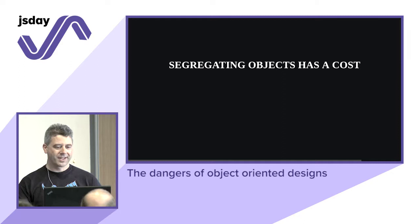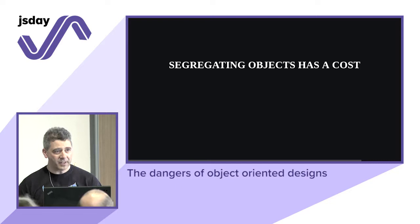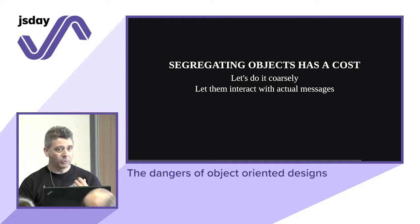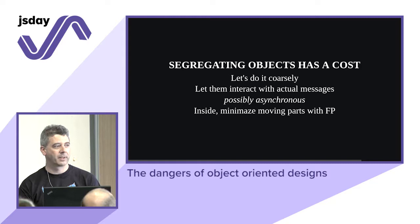Segregating objects has a cost — building walls, communicating with message passing, not keeping references to instances. You're not going to make a proper object for every pixel. So do it coarsely. Let them interact with actual messages, possibly asynchronous — really decoupled. Inside an object, minimize moving parts with functional programming. This is an approach I find very valid and use all the time.